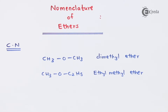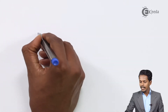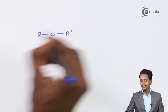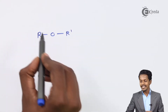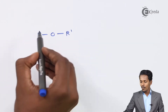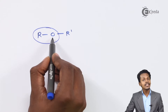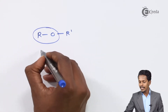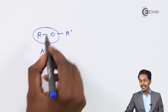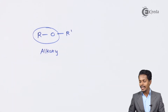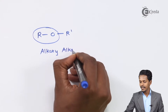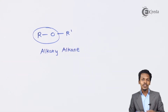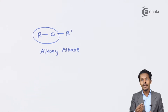Now let us come to the IUPAC nomenclature of ether. There are certain rules I am going to talk about with examples. If we write the ether structure, and one alkyl group is smaller compared to the other, we consider that smaller alkyl group together with the oxygen atom — so it becomes the alkoxy group. The larger alkyl group is considered the parent chain, which is an alkane. Therefore in IUPAC nomenclature it ends as alkoxy alkane.